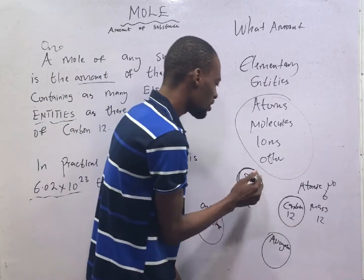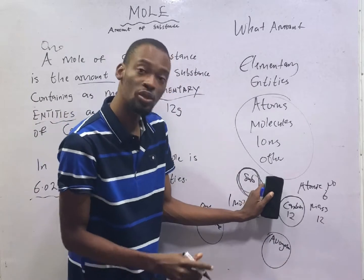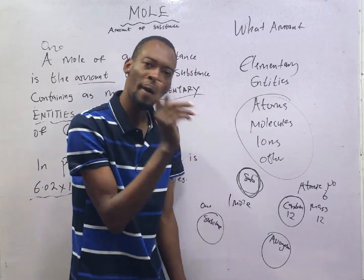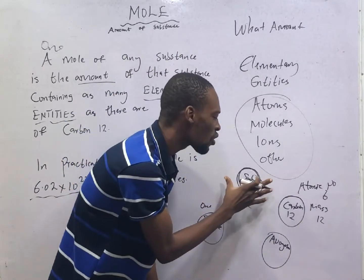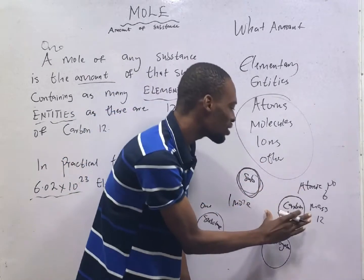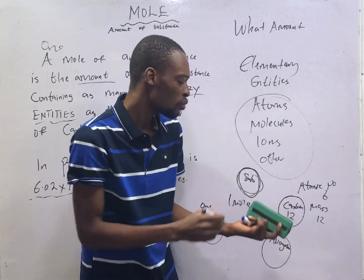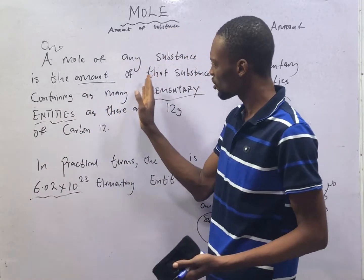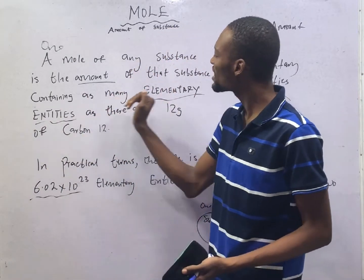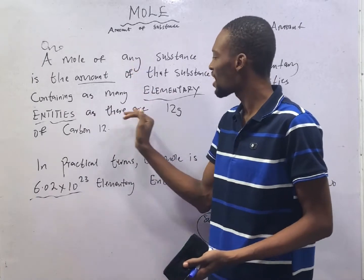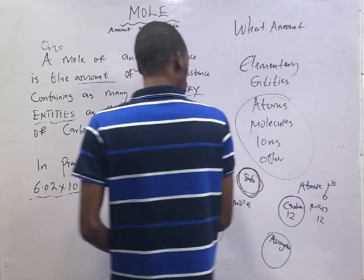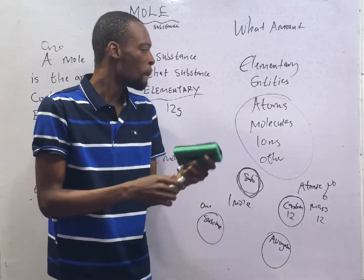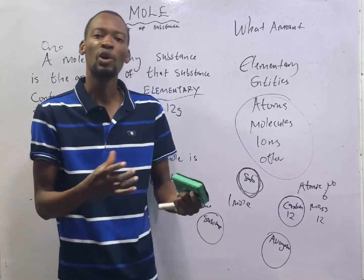If a substance contains exactly the same number of particles as we have in carbon-12, it is one mole. If this substance contains exactly two times the particles we have in carbon-12, we say that we have two moles of this substance. A mole of any substance is the amount of that substance containing as many elementary entities as we have in 12 grams of carbon-12. Elementary entities can be atoms, molecules, ions, and other particles.